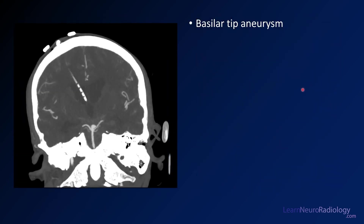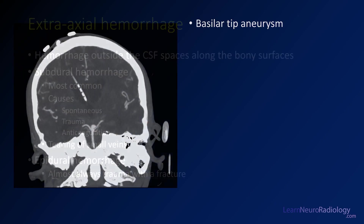This patient went on to get a CT angiogram. On this coronal MIP, you can see the basilar artery, the bilateral PCAs — right PCA here, left PCA here — and a saccular-shaped outpouching that looks like a head on a stick figure. This is a basilar tip aneurysm, and that's the likely cause of the hemorrhage.